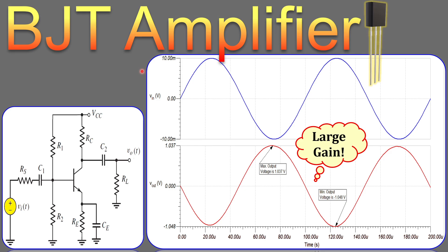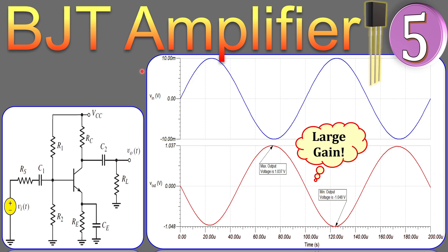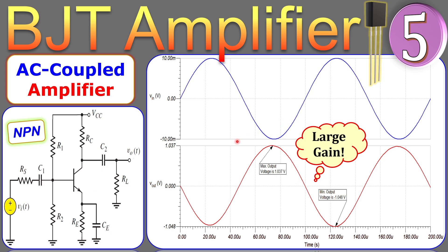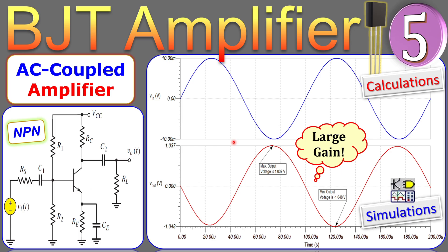Hi everyone, welcome to a new video about BJT amplifiers. This is example number five. In this example I will combine the discussion of the previous four examples together. We now have the complete common emitter amplifier with four-resistor biasing — a practical circuit we can use as an amplifier. This is an NPN BJT AC-coupled common emitter amplifier and we will see that we get a large gain. We will work out the calculation step by step and verify this in SPICE simulations.